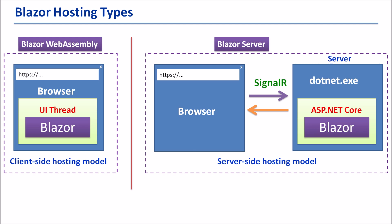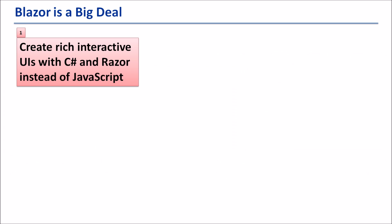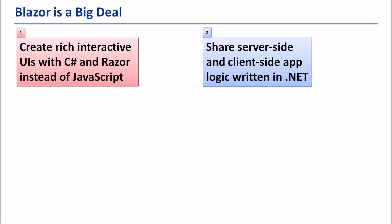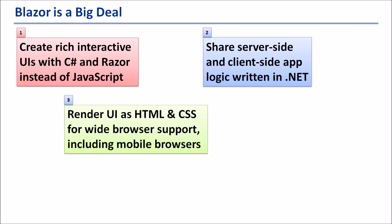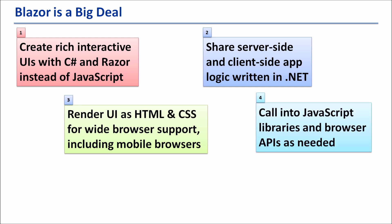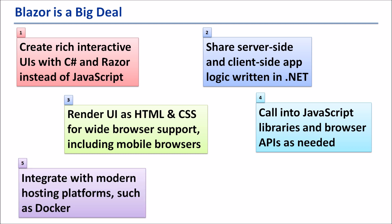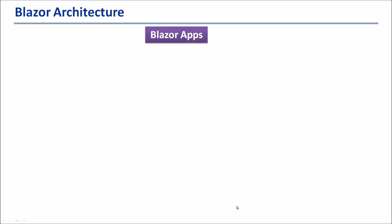Using .NET for client-side web development offers the following advantages: create rich interactive UIs with C# and Razor instead of JavaScript; share server-side and client-side app logic written in .NET; render UI as HTML and CSS for wide browser support including mobile browsers; call into JavaScript libraries and browser APIs as needed; and integrate with modern hosting platforms such as Docker.